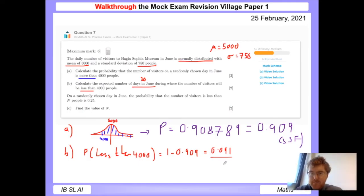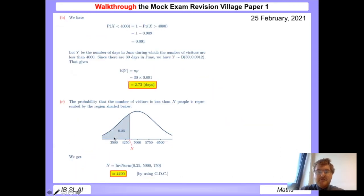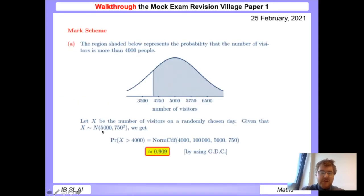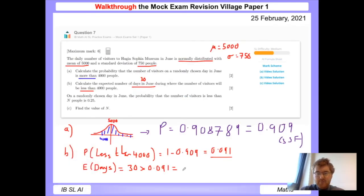To work out the expected number of days, we know there are 30 days in June, so we do 30 times 0.091. If we do that, we get 2.73 days. In this question, I'd always stick to three significant figures as a rule, even though we're working in days.